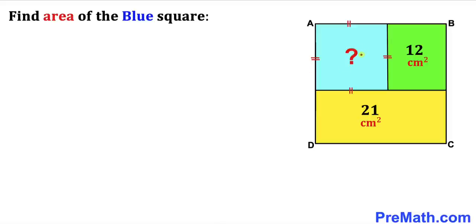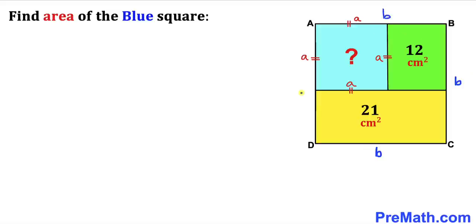Let's focus on this blue square. Since we are dealing with a square, let me call this side 'a' — then this side, this side, and this side are all going to be 'a'. And now let's focus on this big square ABCD. Let me go ahead and label this side lowercase 'b'. Since we are dealing with a square, all these sides are going to be 'b' as well.